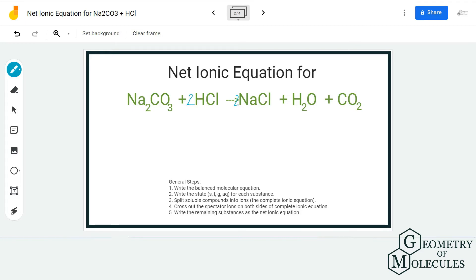The second step is to write the states of the compounds. Na₂CO₃ is in aqueous state, so I'm going to write aq. It's the same for HCl, so I'll write aq as well. For NaCl it is aqueous, for H₂O it is liquid—it's always liquid—and for CO₂ it's gaseous, so I'm going to write g.